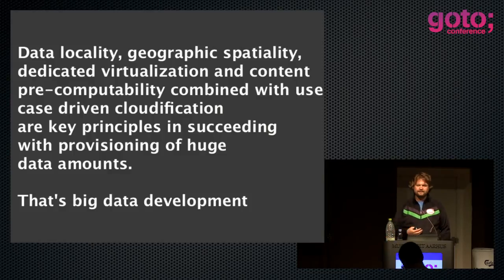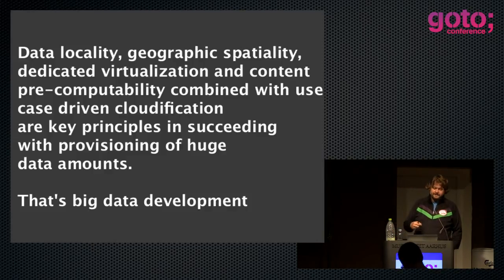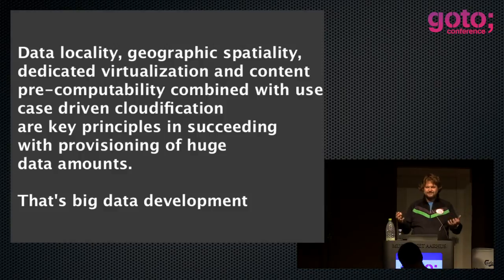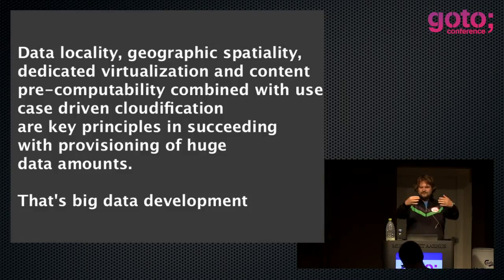Data locality and geographic specificity are very important in provisioning data. Dedicated virtualization context and content pre-computability — you can use CDNs to host data or whole applications, or pages pre-computed by you. So you don't hit the database, you don't go to the last mile; you just present slightly inconsistent data for a moment or 15 minutes. That's a way to handle the geographic problem. It's use-case-driven cloudification — the right use-case for the right cloud-based strategy, and it's not black or white.